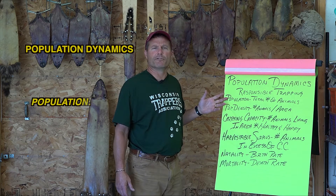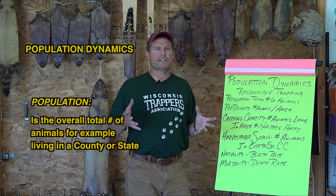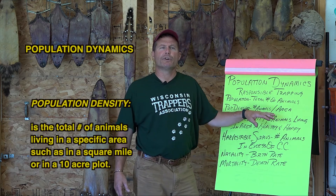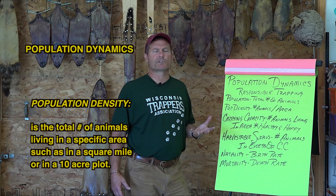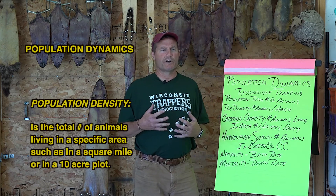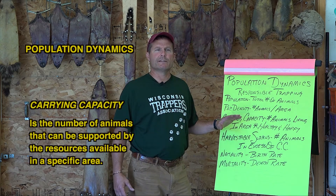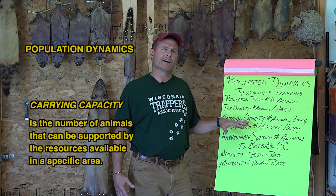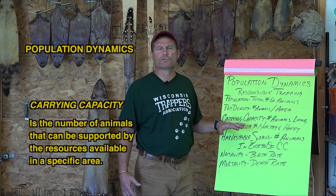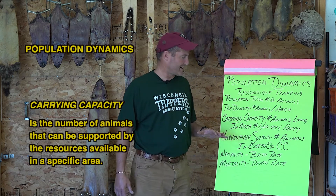Population is the total number of animals — it can be expressed as the total number of animals in a county or the state. Population density is the total number of animals in an area. Using raccoons as an example, density is expressed as 10 raccoons per square mile or 10 raccoons per 40 acres. Carrying capacity is the number of animals living in that area that have enough food, shelter, and space to live happy and healthy lives. Carrying capacity changes throughout the year depending on food availability, denning and nesting sites, and competition for food.